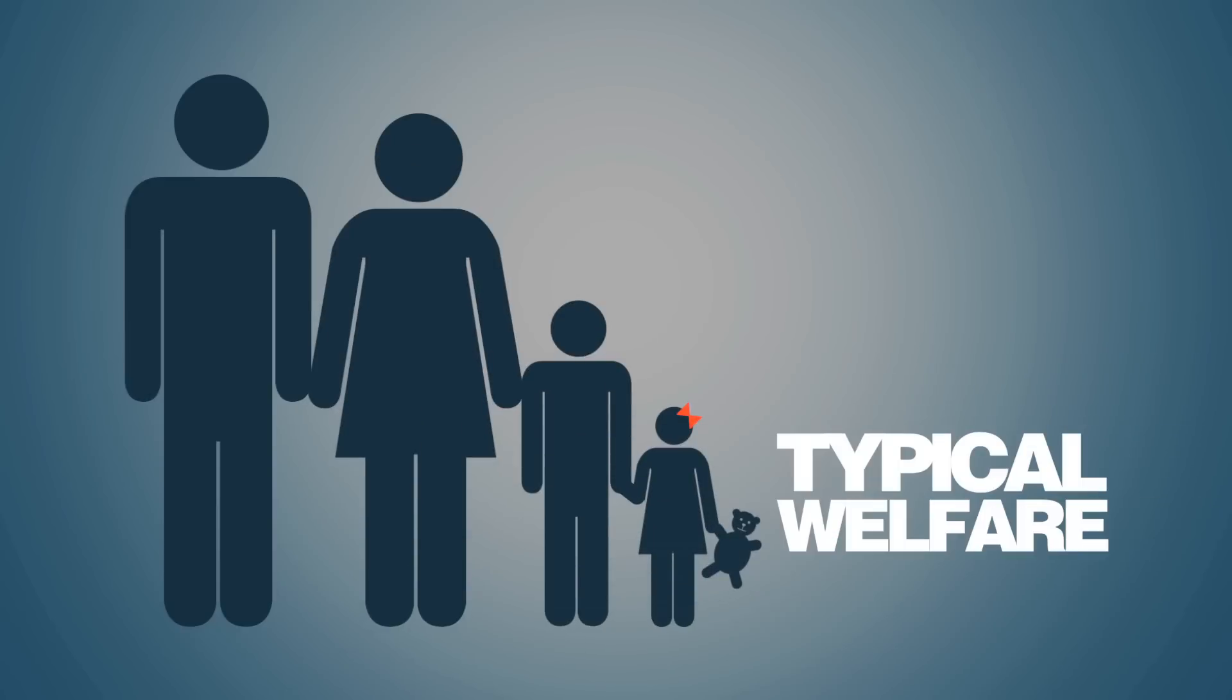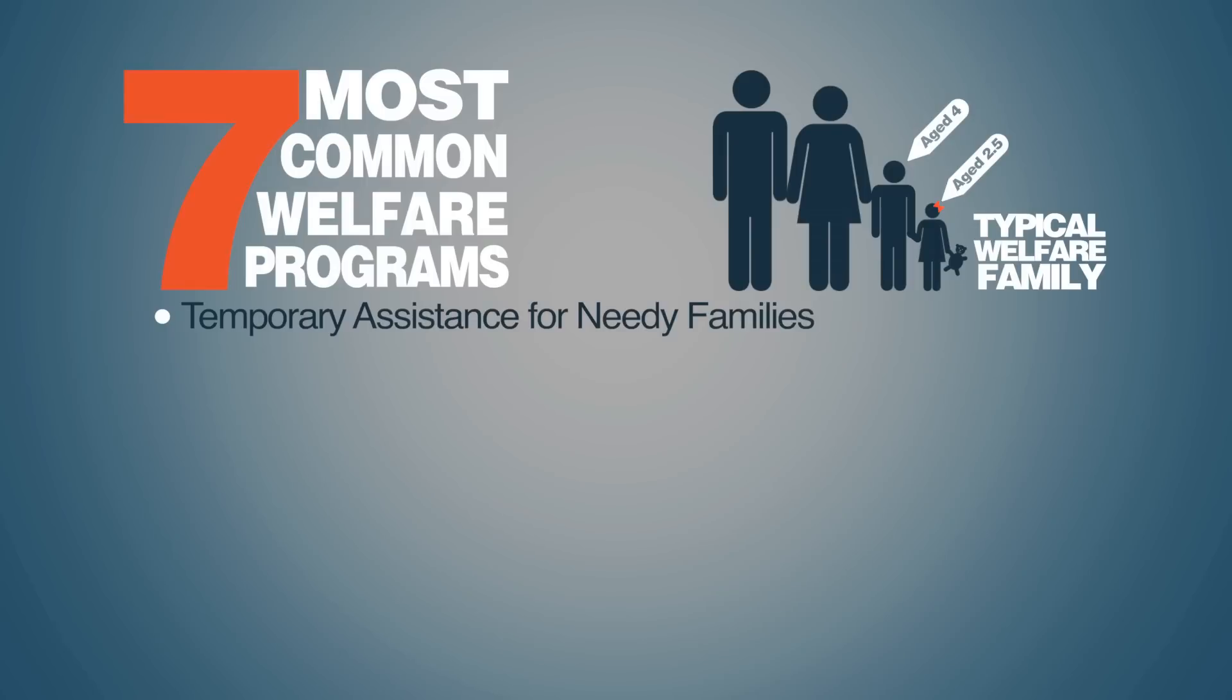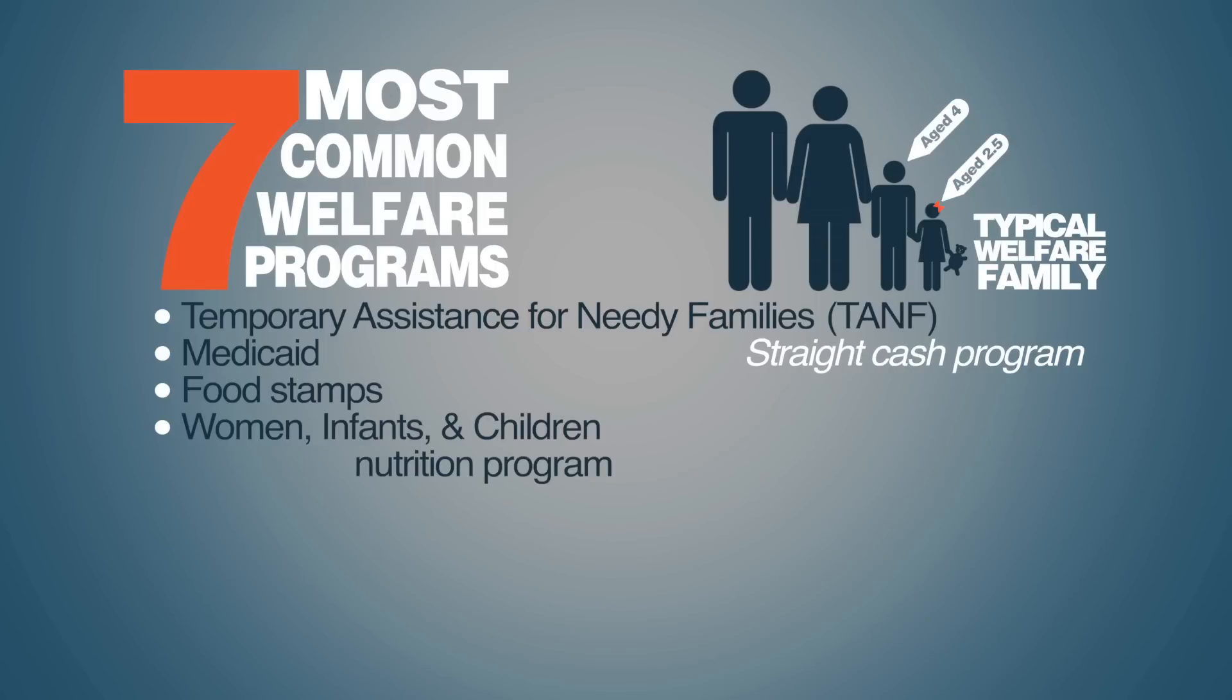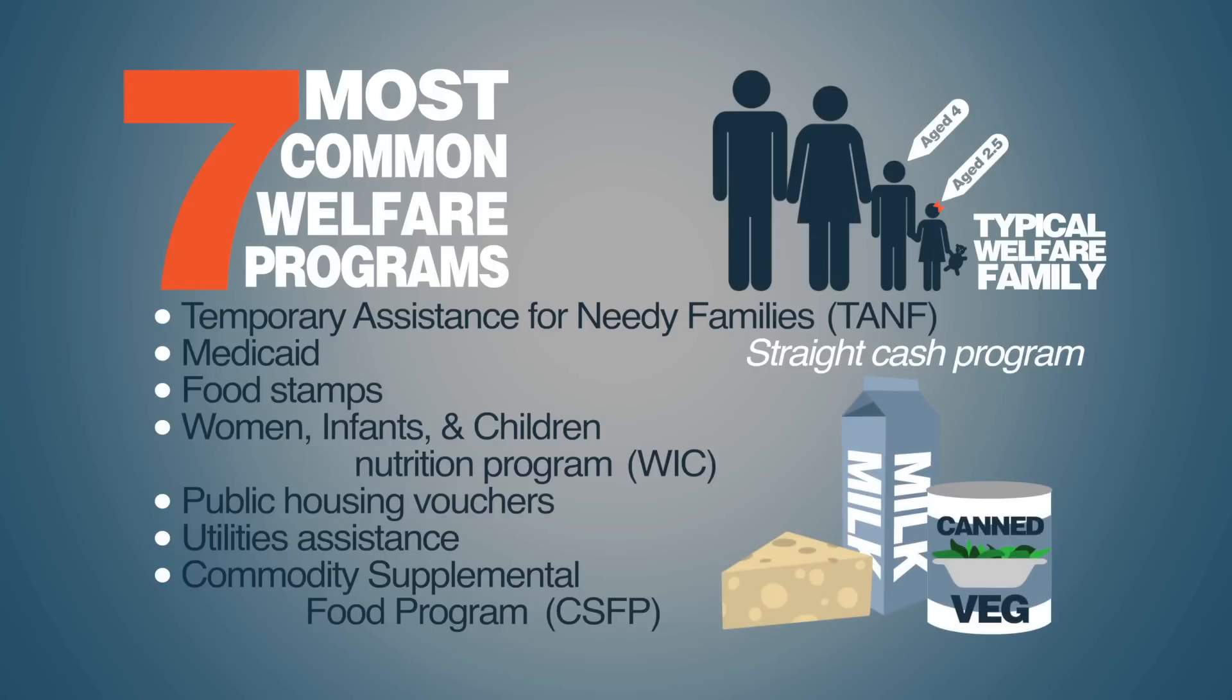Our study looked at a typical welfare family with two children under the age of five. We assume that this family receives benefits from the seven most common welfare programs: Temporary Assistance for Needy Families (TANF), a straight cash program; Medicaid; food stamps; Women, Infants, and Children nutrition program (WIC); public housing vouchers; utilities assistance; and the Commodity Supplemental Food Program (CSFP), which provides staples such as cheese, milk, canned vegetables, and other basic dietary items.